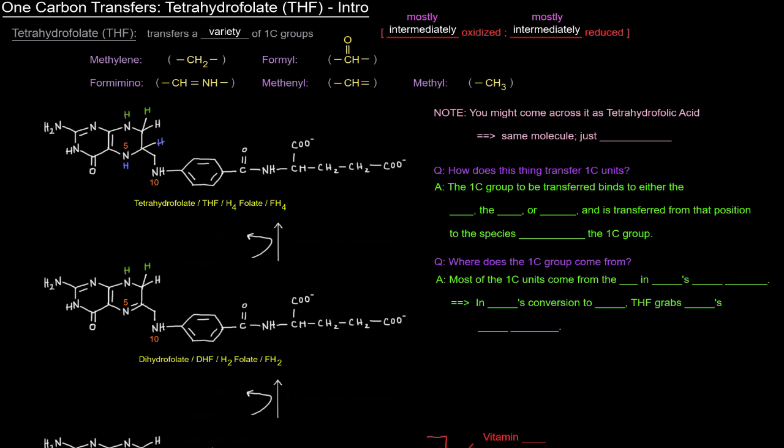Now, tetrahydrofolate structure looks like this. You might come across it as tetrahydrofolic acid, and that would just have these carboxyl groups protonated, but it's the same molecule. So this is tetrahydrofolate. It's got tetra refers to four, hydro hydrogens, and folate refers to the rest of the molecule. So the four hydrogens that we're talking about are these two green guys and these two blue guys.